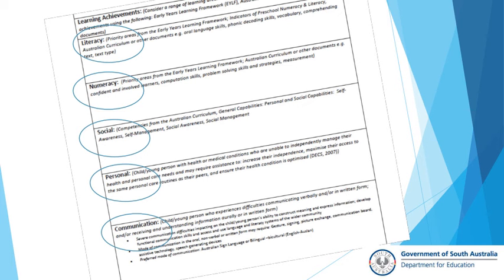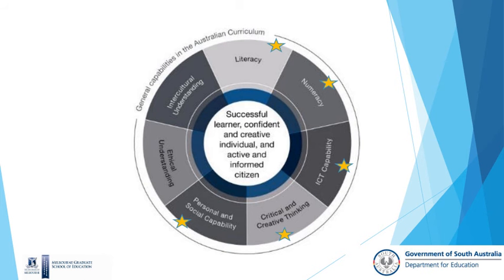All these areas can be covered via the various assessment tools. It also connects really well to our general capabilities. You'll see where the stars indicate that there is an assessment that directly relates to the general capabilities. So there is an assessment for literacy, numeracy, ICT capabilities, critical and creative thinking, and personal and social capabilities. The other two areas, ethical understanding and intercultural understanding, at this point do not have an assessment that relates to them.